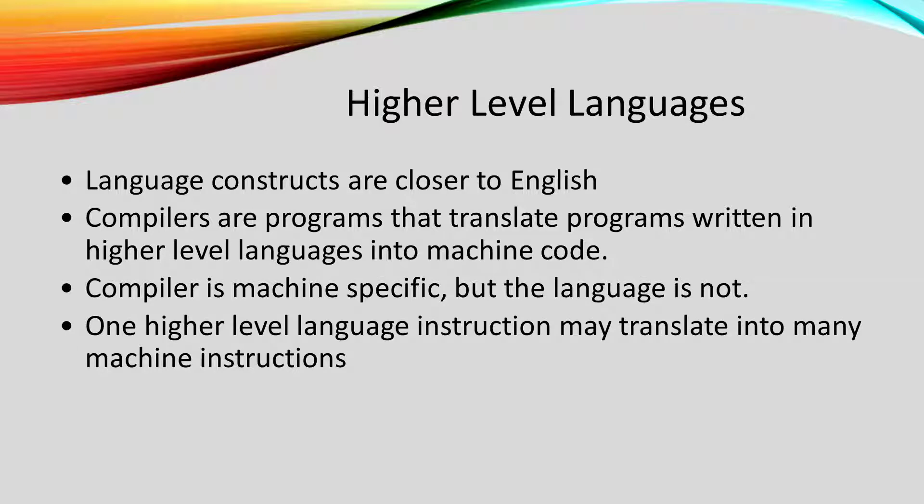After assembly languages, we developed higher level languages. By higher level, we mean closer to English and less machine specific. With higher level languages, we still need a program to translate our code, called source code, into machine code. These translating programs are called compilers. Compilers are machine specific because they are translating into a specific machine's language. But the higher level language is not machine specific. These are no longer assembly languages because one higher level instruction may be translated into many machine instructions.